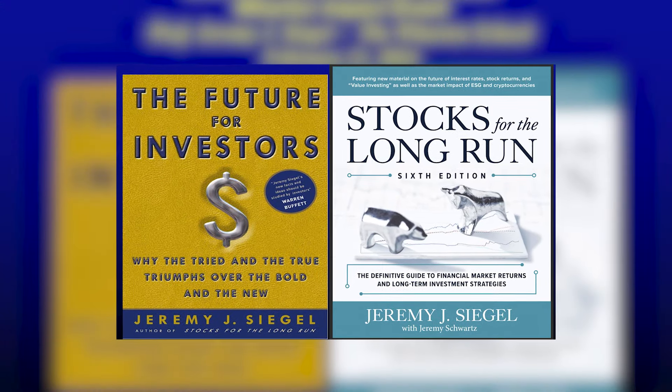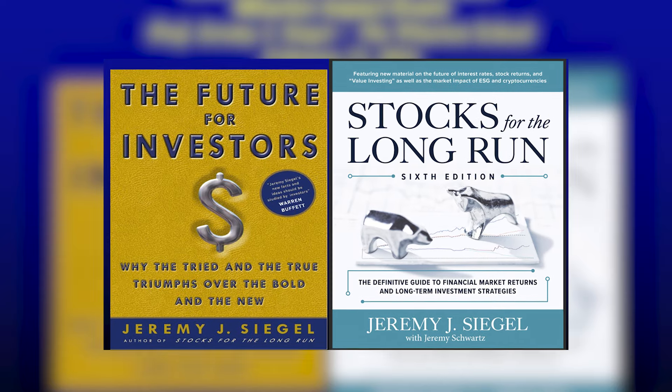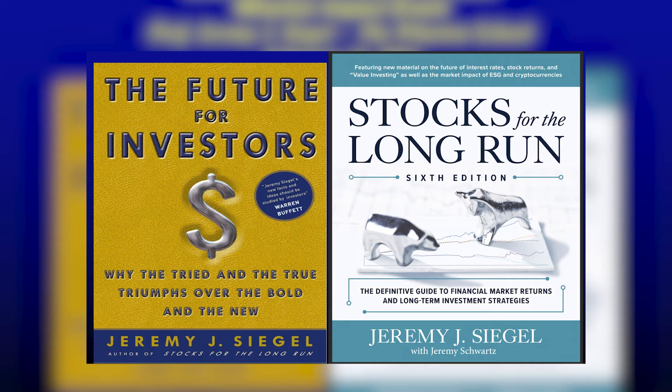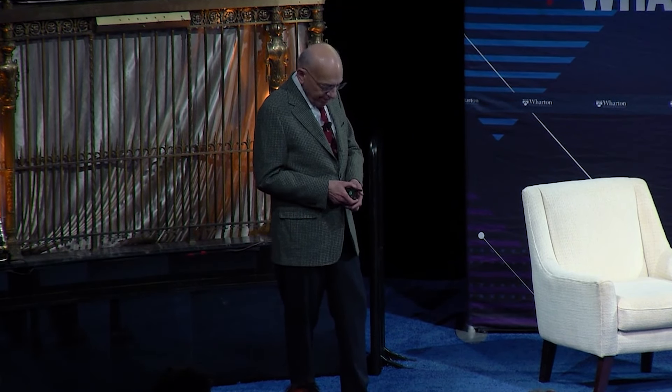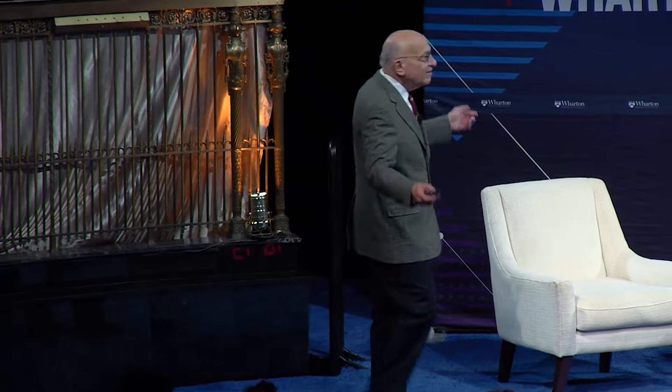My best-known book is Future for Investors, my second book. The first book, which just a year and a half ago came out with its sixth edition, is Stocks for the Long Run, co-authored with Jeremy Schwartz, who was a star researcher in my class and then followed me when I joined WisdomTree — an investment firm here in New York that issues ETFs — to make this offering possible. We have both signed those books if you want to pick them up in the back. Let me get to what my colleagues call my iconic graph.